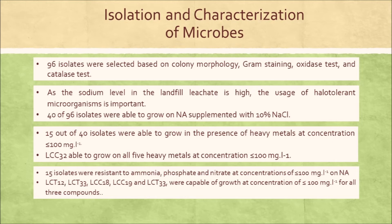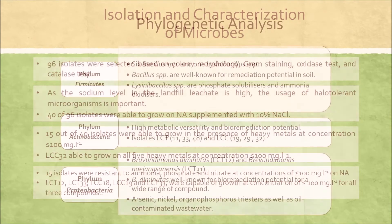In particular, LCC32 was able to grow on all 5 heavy metals — copper, nickel, iron, cadmium, and arsenic — at concentrations less than or equal to 100 mg per liter. Moreover, 15 isolates were resistant to ammonia, phosphate, and nitrate at concentrations of less than or equal to 100 mg per liter on nutrient agar. For example, LCT12, LCT33, LCC18, LCC19, and LCT33 were capable of growth at concentrations of less than or equal to 100 mg per liter for all three compounds.